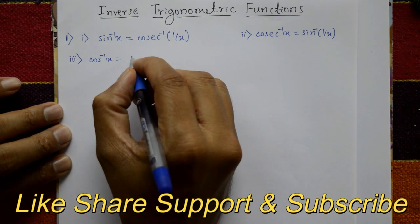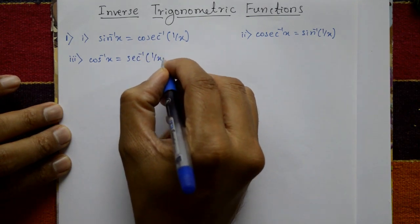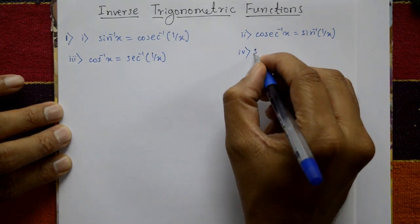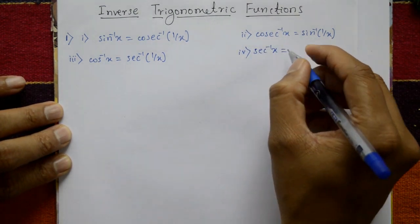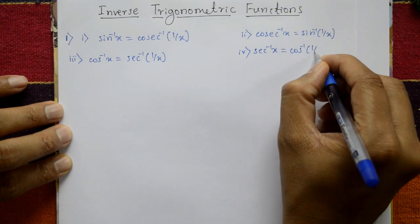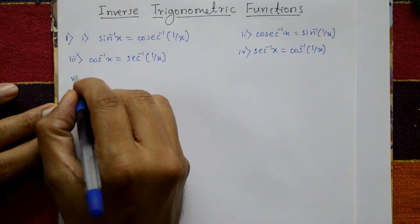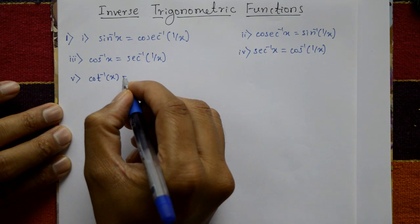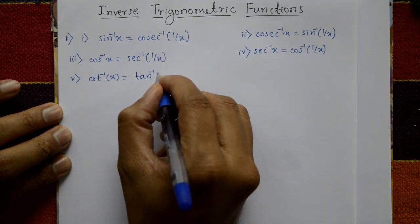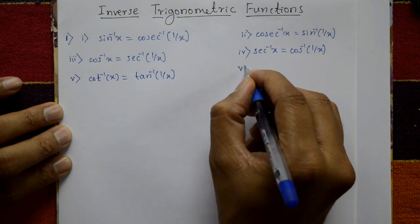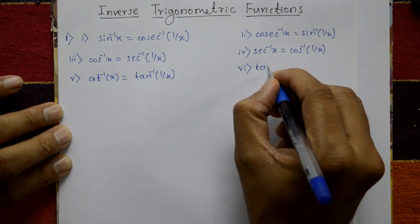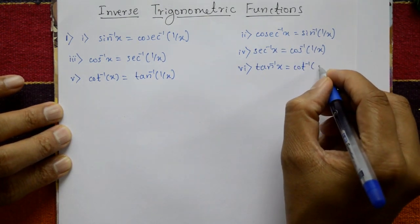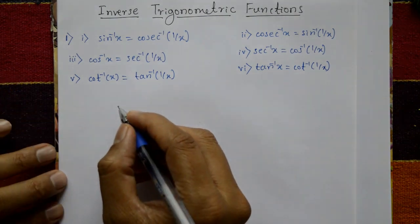Next, cos inverse x is equal to secant inverse of 1 by x. Secant inverse x is equal to cos inverse of 1 by x. Fifth one: cot inverse x is equal to tan inverse of 1 by x. And tan inverse x is equal to cot inverse of 1 by x. Very simple inverse trigonometry functions.